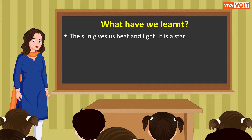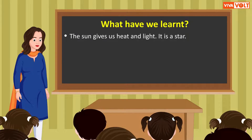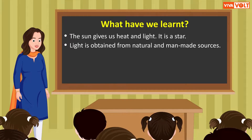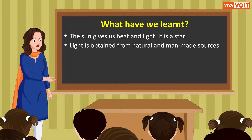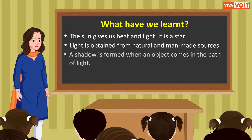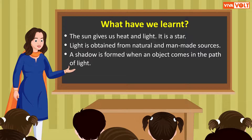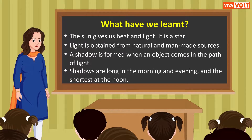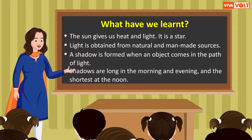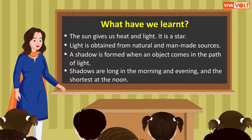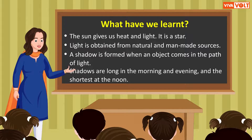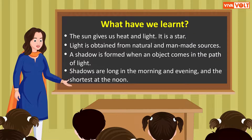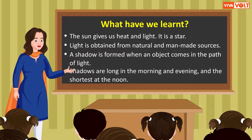What have we learned? The sun gives us heat and light — it is a star. Light is obtained from natural and man-made sources. A shadow is formed when an object comes in the path of light. Shadows are long in the morning and evening, and the shortest at noon. Children, hope you enjoyed learning these concepts. We will meet soon to learn new things!